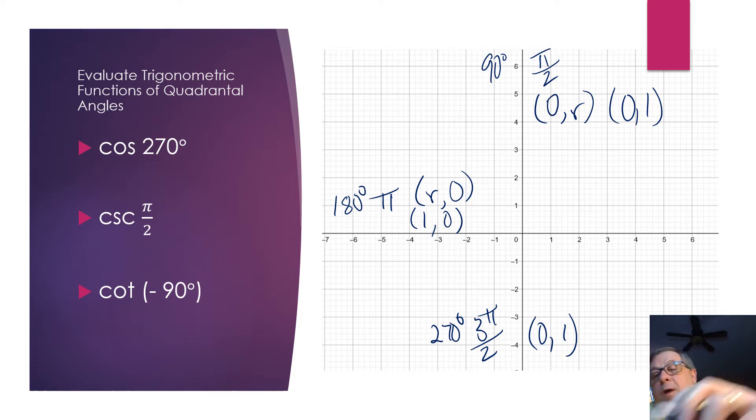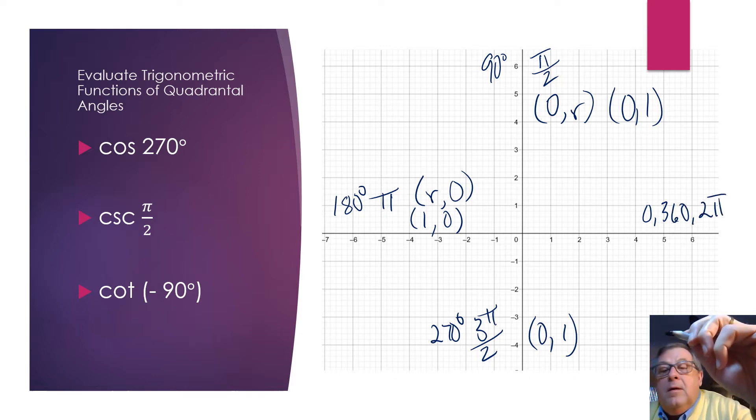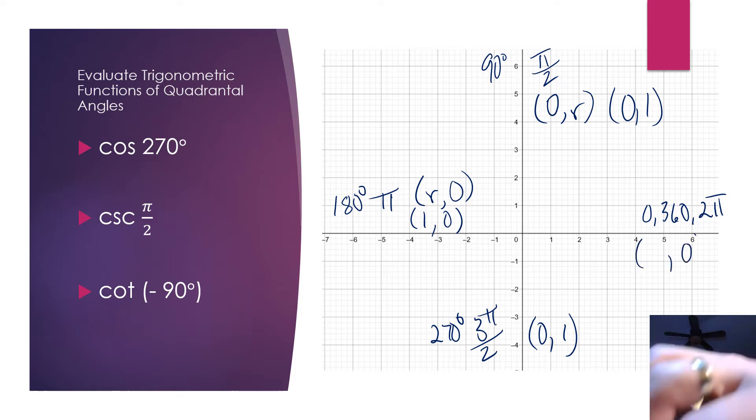And if we come all the way back around to the positive side of the x-axis, and let's say our terminal side is lying on the positive side of the x-axis, we know that this is either at 0, or 360, or 2 pi. And again, our y-coordinate is equal to 0. And if we define r as our x-coordinate, our radius lying on that x-axis is 1, then we would have the cosine there at 1. All right, well, let's look at these trig functions.